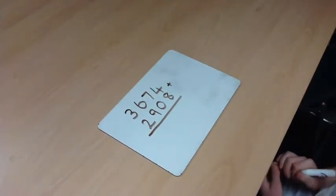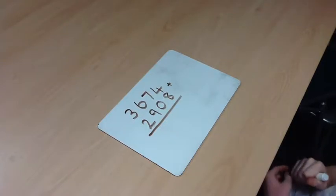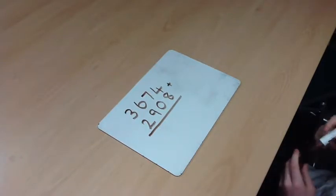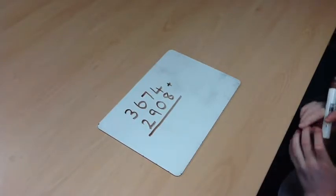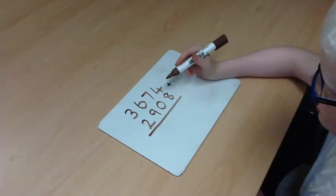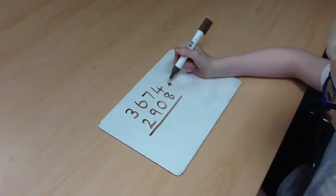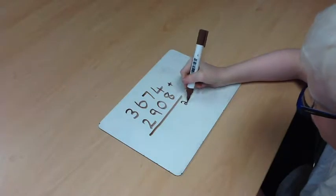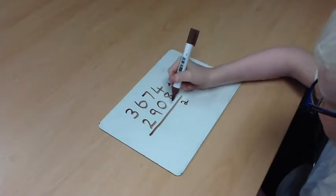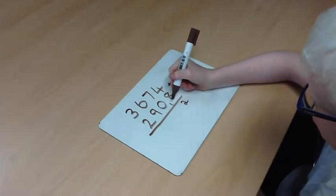Today I'm going to really add a 4-digit number to a 4-digit number. Start off with 8 add 4 which is 12. So you write the 2 down here and you carry the 1 into the next column.